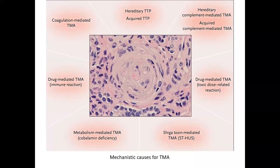We can also classify TMA mechanistically based on the underlying pathogenesis. TMA can occur due to ADAMTS13 deficiency, as in TTP, or complement-mediated TMA, which can be either hereditary or acquired. There is also drug-mediated TMA, Shiga toxin-mediated — the so-called classical HUS — metabolism-mediated TMA due to cobalamin deficiency, and coagulation-mediated TMA.